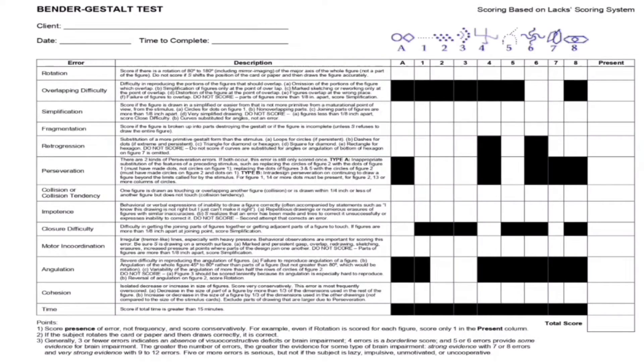The fourth error is Fragmentation. In fragmentation, the client drew the figures incompletely, or divided the figures into fragments or parts. For example on card 1, which has a dotted line, the client might divide the dots into fragments — three dots, then a space, then three more dots — fragmenting the drawing into parts. We also observe fragmentation across all cards. If present, write 1; if not present, write 0.